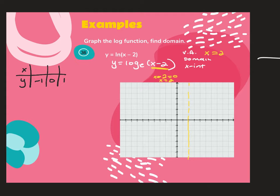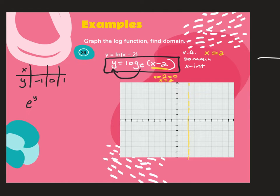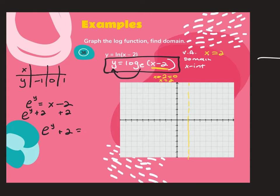I'm going to take this log expression and convert it into exponential. There's nothing in front of the log and nothing outside the parentheses, so I can do that now. E comes over and picks up the y, the log drops off, leaving x minus 2. If I solve for x, I get e to the y plus 2 equals x.